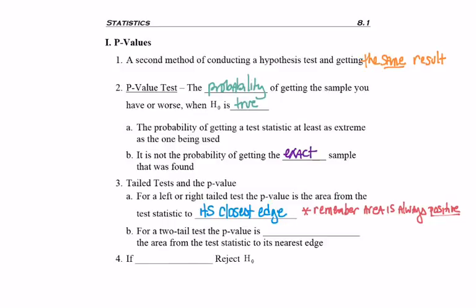But if we don't have a left or a right-tailed test, if we have a two-tailed test, what symbol did we use for that? Yeah, not equal to. Then our p-value is going to be double or twice the area to the nearest edge.